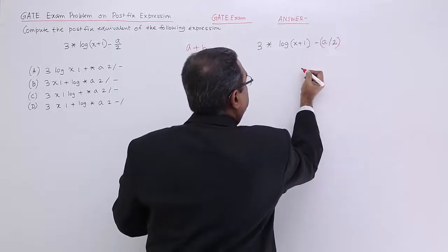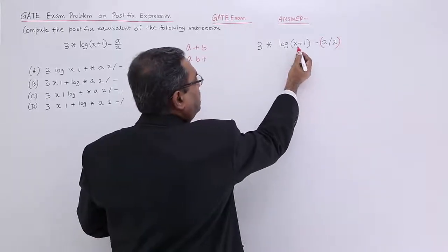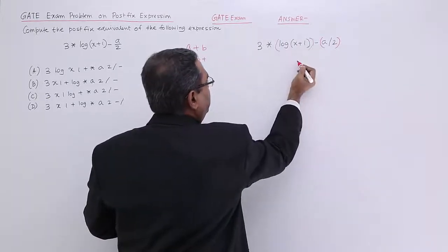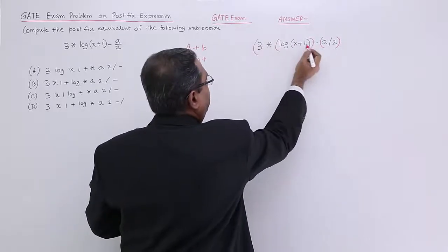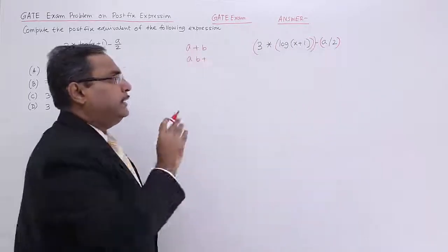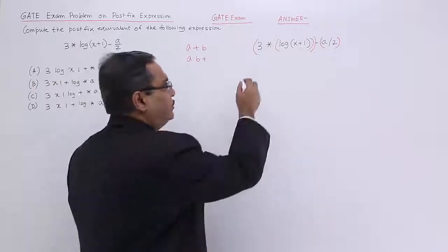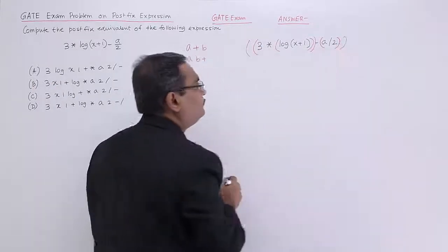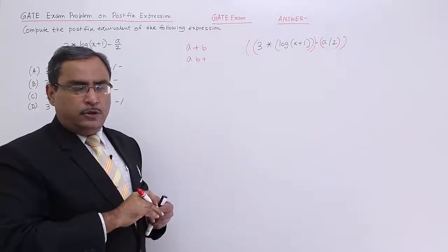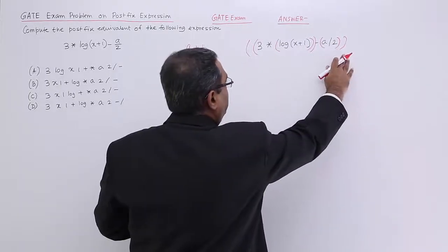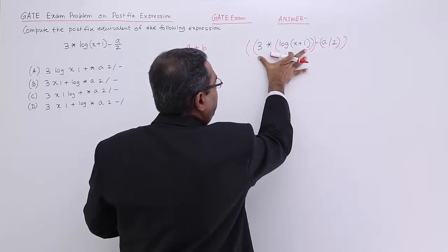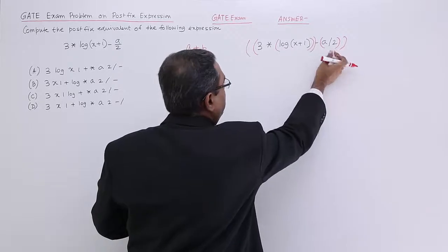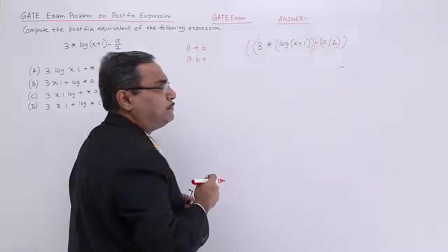Now, this has to be done. Then, on this x plus 1, it has to be calculated and then 3 will be multiplied with it and then subtraction will take place. So this is the nesting of brackets. That means the full expression is nothing but this expression minus this. So at the end, I shall have this minus.